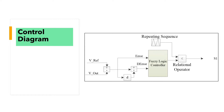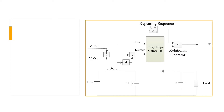This is our control diagram. Here we have our V reference and V output. The difference between them goes to the derivative and the error, and we have our delta error as well. We have two inputs to the fuzzy logic controller, and the output of the fuzzy logic can go to the relational operator. This is then compared with a repeating sequence and goes to the switch. Here we have our control diagram with our DC-DC boost converter — we have our switch, triggered by the output of the relational operator, and our components in the DC-DC boost converter.